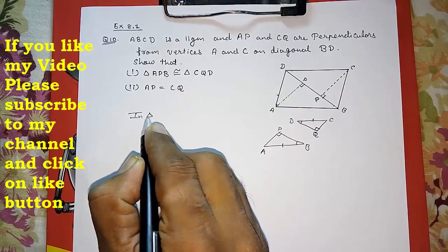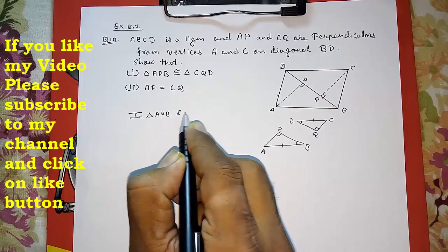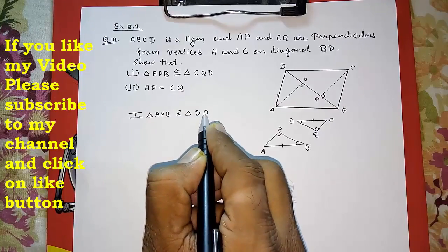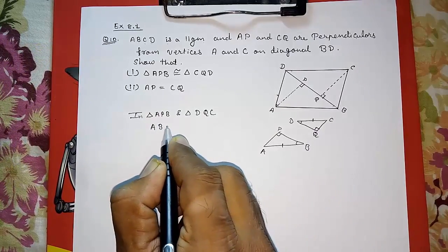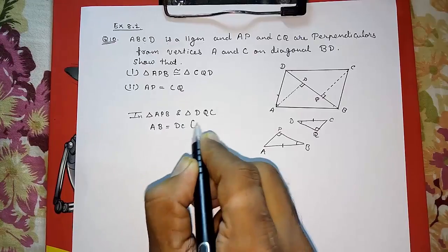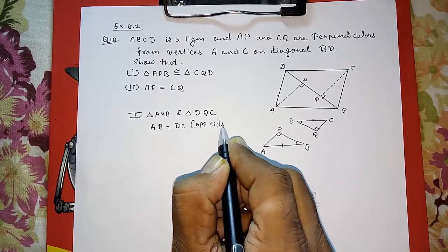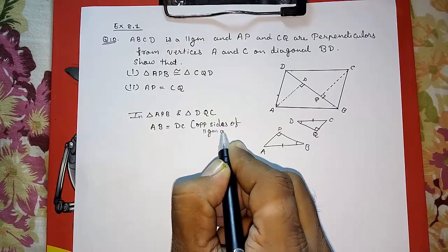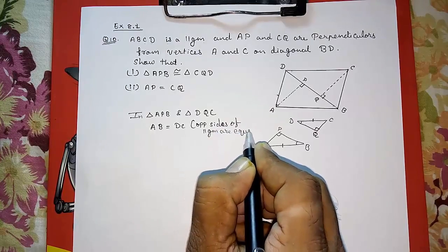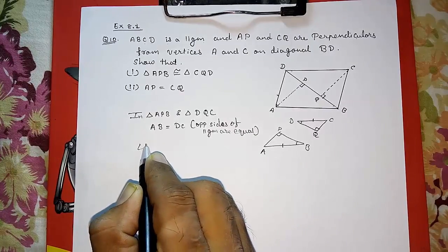First we got AB is equal to DC. Why? Opposite sides of a parallelogram are equal. Then second thing, angle APB is equal to angle DQC.